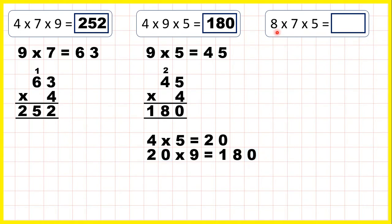Now 8 times 7 times 5. 8 times 7 is 56, then we can work out 56 times 5. 6 times 5 is 30, so 3, 0.